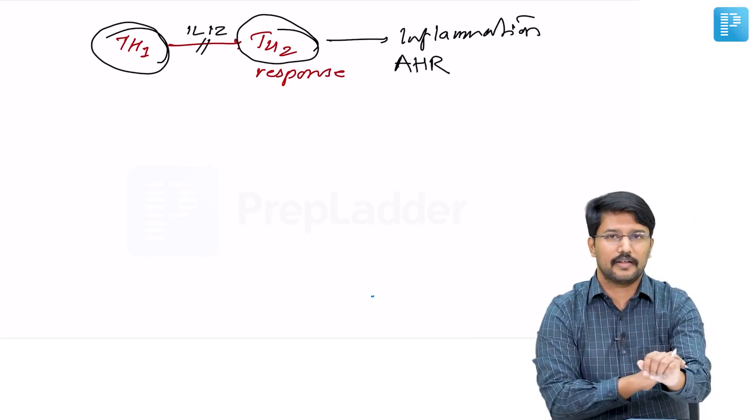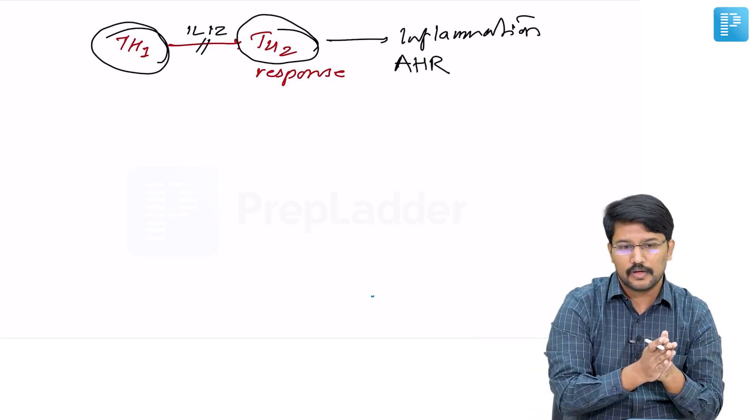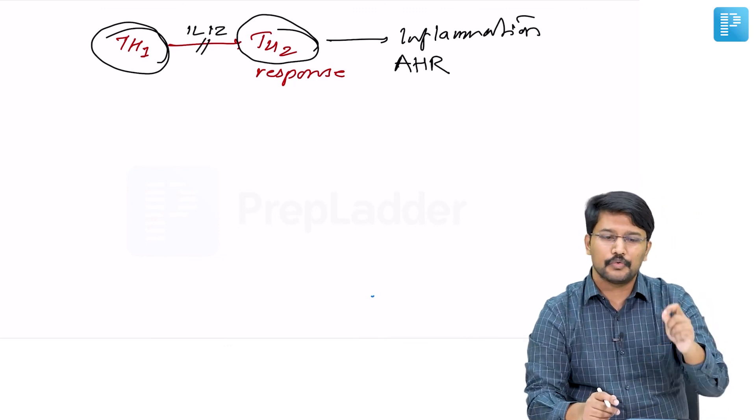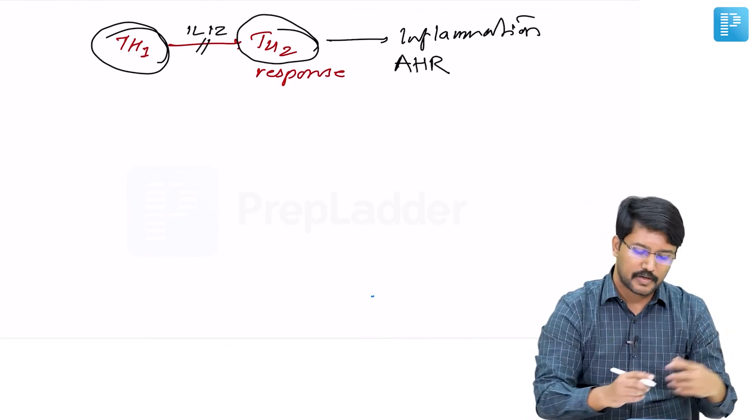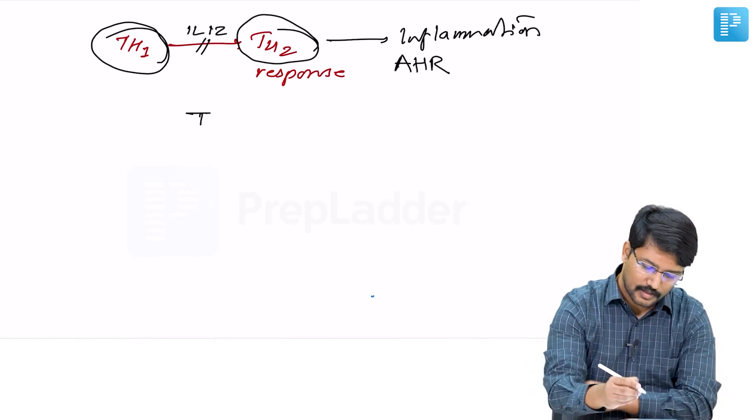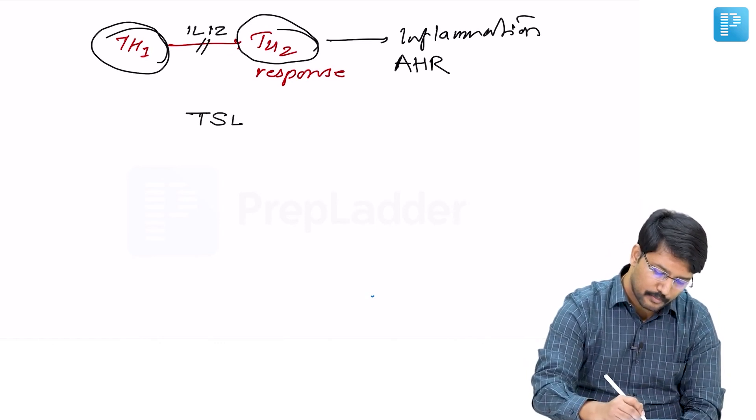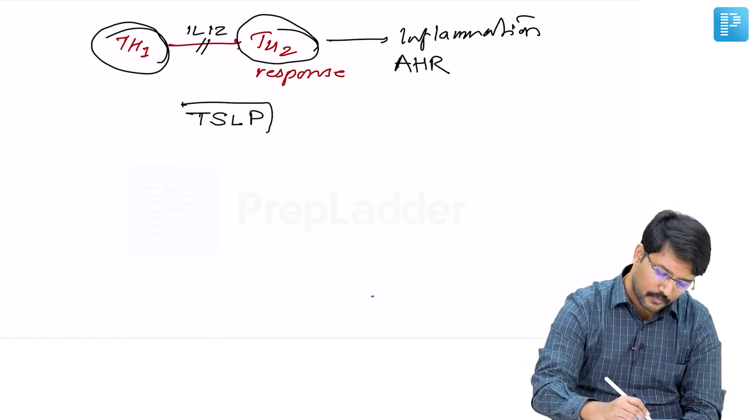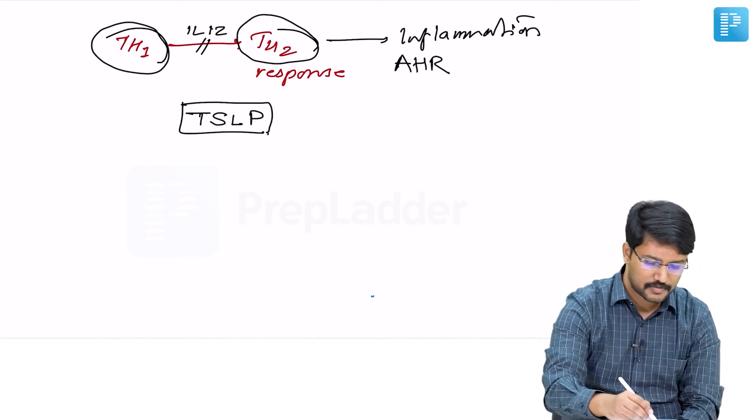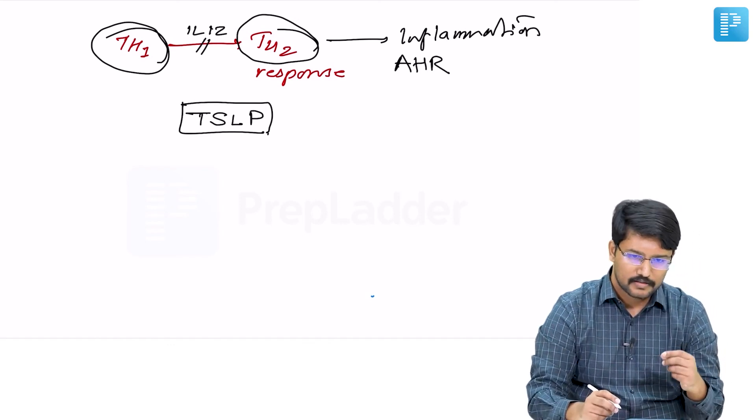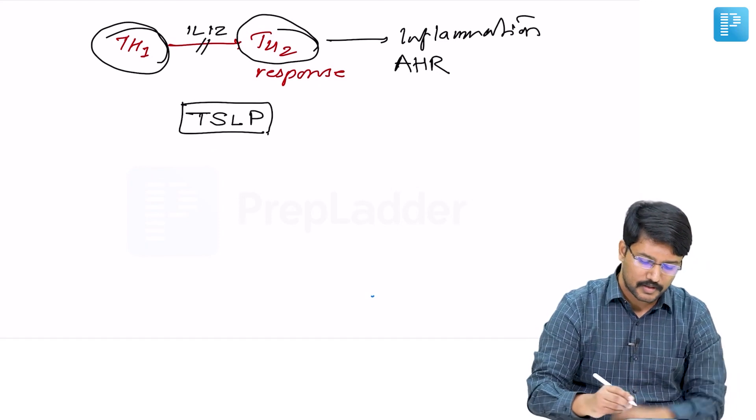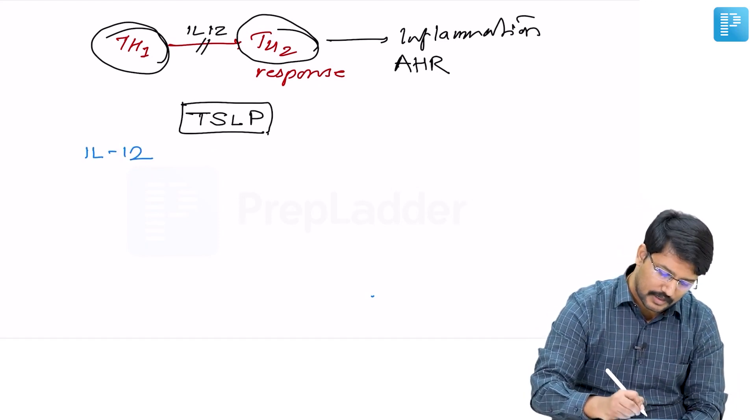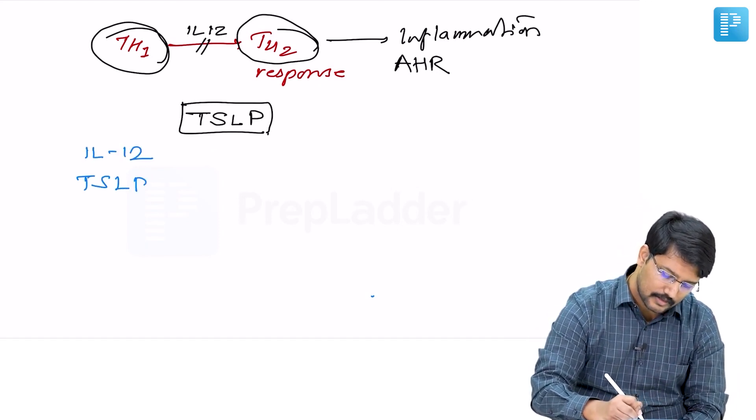Another factor that helps to recruit Th2 over Th1 in an asthmatic is thymic stromal lymphopoietin (TSLP). Remember these two points which support Th2 response over Th1: interleukin 12 and TSLP.